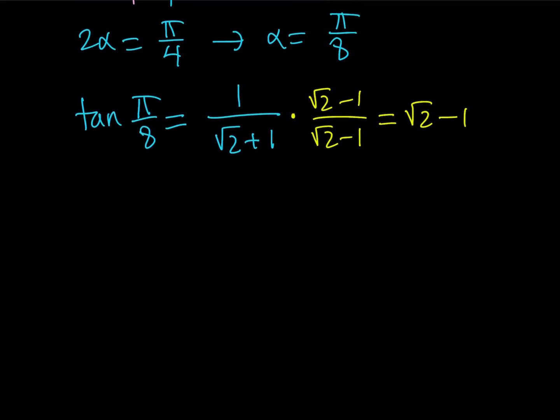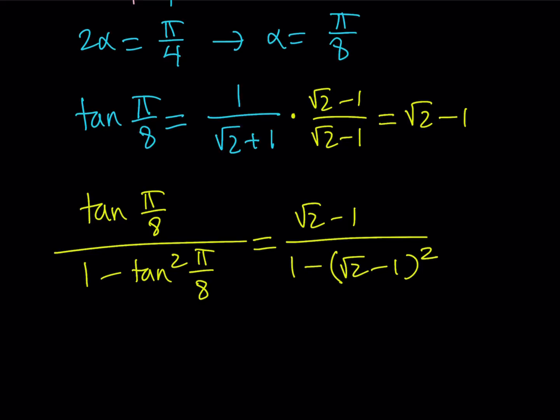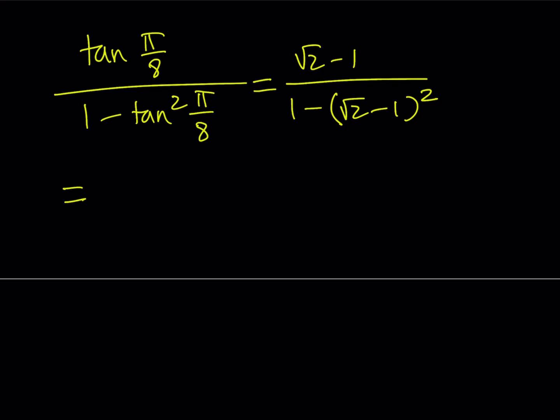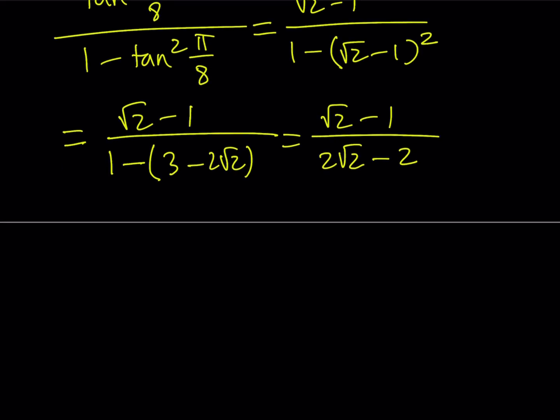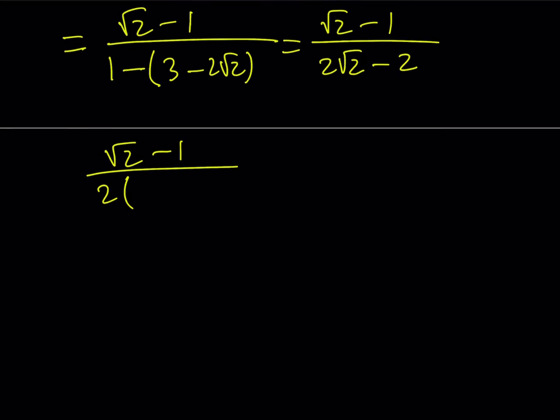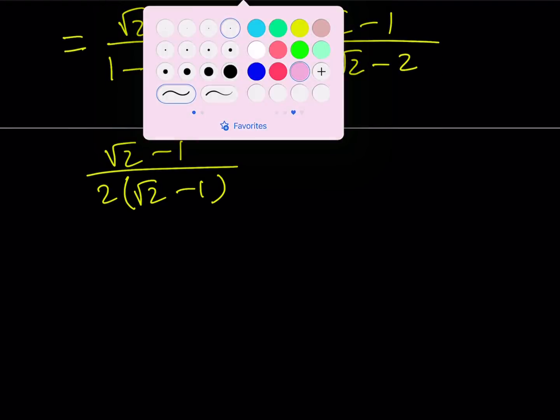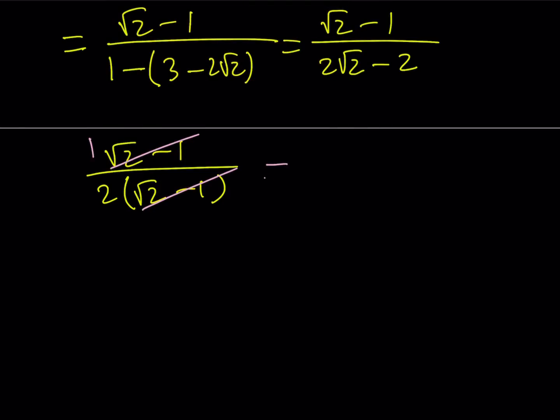Now, what am I going to do with this? My goal is to evaluate this expression: tangent pi over 8 divided by 1 minus tangent squared pi over 8. We're just going to plug it in. I need to square this. I need to square root 2 minus 1. A minus b squared is a squared plus b squared minus 2ab, that's 3 minus 2 root 2. 1 minus 3 is negative 2, so it's going to give me 2 root 2 minus 2. It is factorable. Root 2 minus 1 divided by 2 times the quantity root 2 minus 1, leaving you with 1 half.